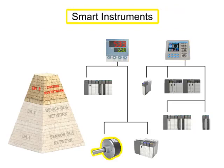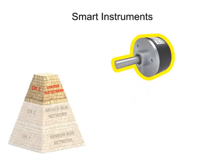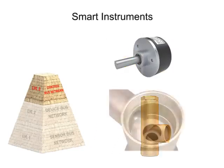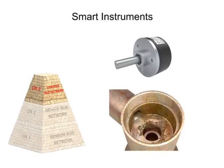Smart instruments capable of performing complex operations can also be connected at this network level. For instance, there might be a smart instrument that measures wear and tear on a valve. When the wear reaches a dangerous level, it will signal the controller that the valve needs to be replaced.